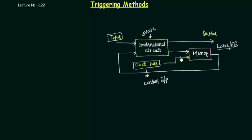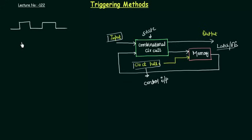So this is what we have to trigger. Now let's move to the other part of this lecture in which we will talk about the different types of triggering methods available to us. I can divide the triggering methods into two types: the first one is level triggering and the second one is edge triggering.